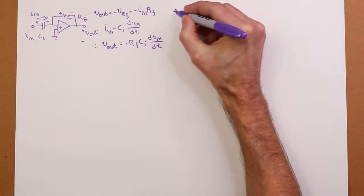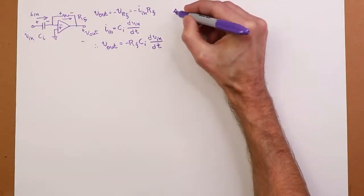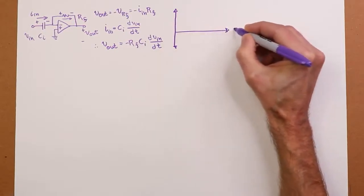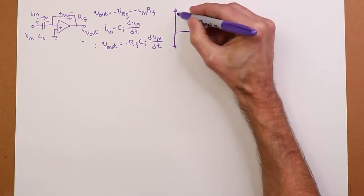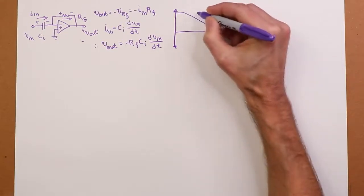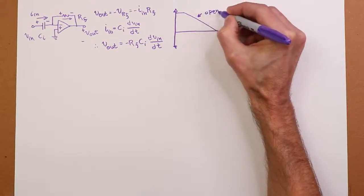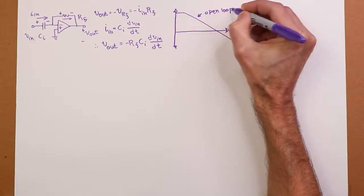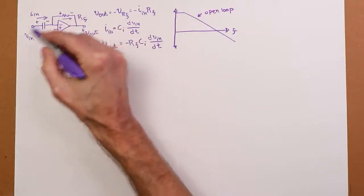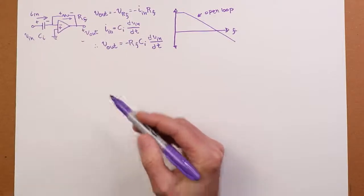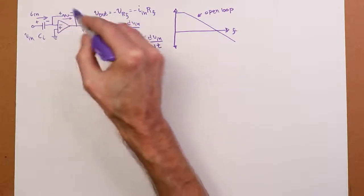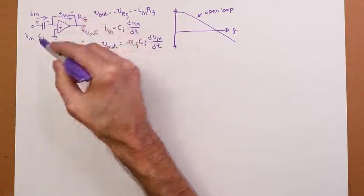Now, the frequency response of this, as you might expect, would be the opposite of what we see for the integrator. So the open loop response would look something like this. The closed loop, if you think of this as an inverting amplifier, R_F over R_I, R_I in this case is X sub C. And we know as frequency goes up, X sub C gets smaller and smaller. So as frequency goes up, then the gain should be getting higher and higher.